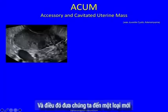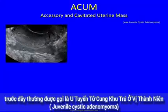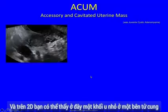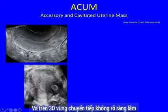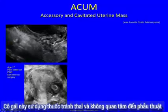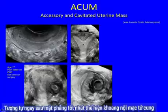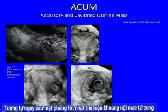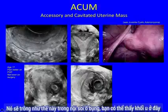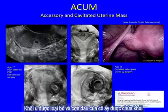That takes us on to a new entity called accessory and cavitated uterine mass (ACUM), which used to be called juvenile cystic adenomyoma. This is a 17-year-old girl with intense dysmenorrhea. On 2D you can see there's a little mass over to one side of the uterus, and on 3D it's slightly indistinct but this is a normal-shaped cavity, with just slightly behind that plane this little mass. This girl went on the mini pill and wasn't keen on surgery. As opposed to an 18-year-old who has a slightly arcuate uterus and a cystic mass in the myometrium with internal hemorrhage — this is what that looks like at laparoscopy. This patient had opted for surgery, it was removed, and her pain was cured.